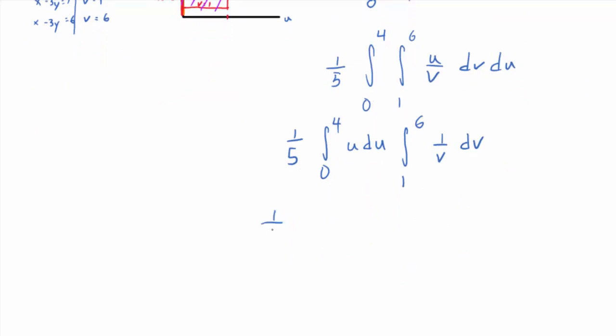So what do we have? We have 1 fifth out front, and then we integrate. What do we get? u squared over 2. So I'll make it times 1 half u squared. Evaluate from 0 to 4, right? And I'm just going to go ahead and evaluate this too. What do you get when you integrate 1 over v? Ln of v. Do I need absolute values around it? No, because the inputs are positive, right? Everybody believe that so far?